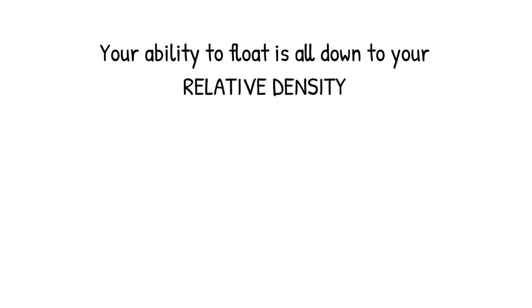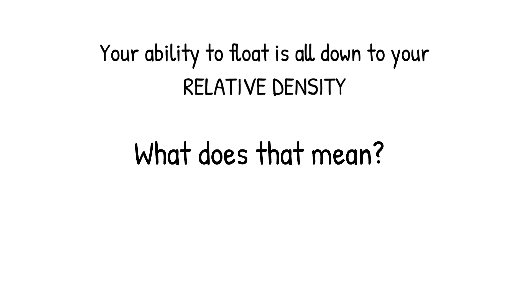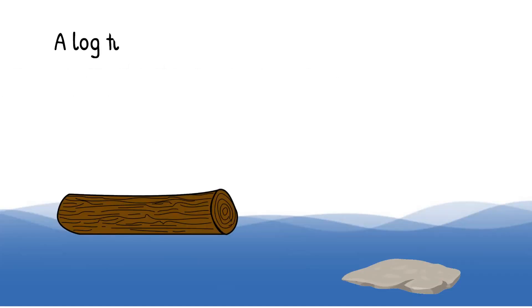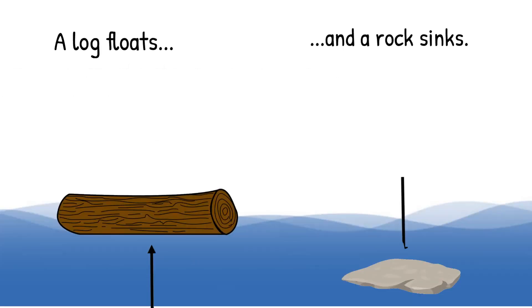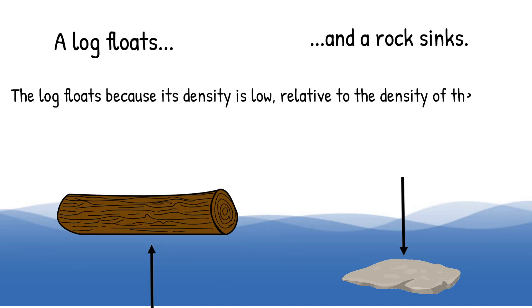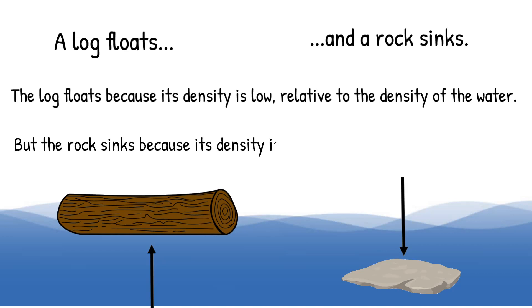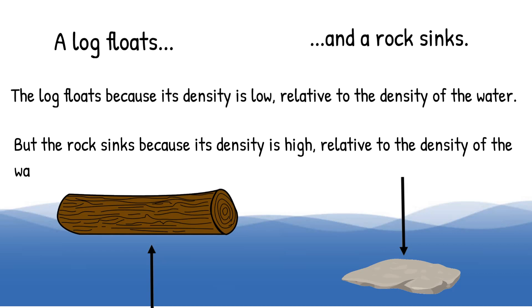Your ability to float is all down to your relative density. What does that mean? Take this example: a log floats and a rock sinks. The log floats because its density is low relative to the density of the water, but the rock sinks because its density is high relative to the density of the water.